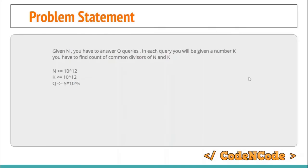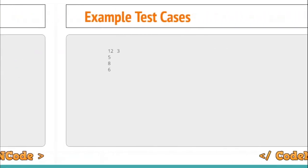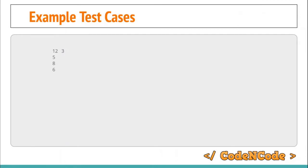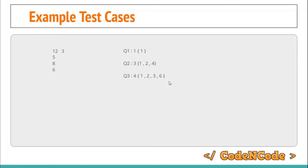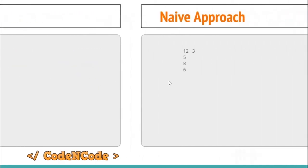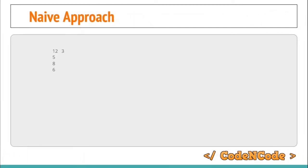Let's see how we can answer the query for total number of common divisors of N and K in log N time. First, let's look at some example test cases. For the first query, the number of common divisors between 12 and 5 is 1; between 12 and 8 it is 3 (which are 1, 2, and 4); and between 12 and 6 it is 4 (which are 1, 2, 3, and 6).